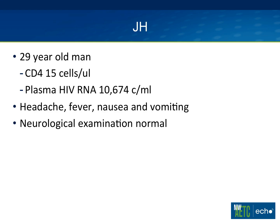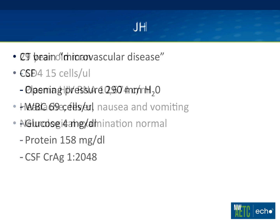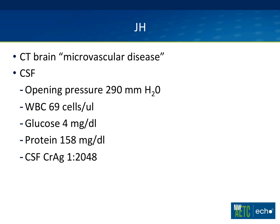A case: a 29-year-old man with a very low CD4, on therapy but probably not taking it, presented with headache, fever, nausea, and vomiting with a normal neurologic examination. His CT showed microvascular disease — rarefication of the white matter. CSF opening pressure was elevated at 290 millimeters of water (normal is below 200). He had mild CSF pleocytosis of 69 white cells, all lymphocytes; very low glucose; high protein at 158; and CSF cryptococcal antigen titer reactive at 1 to 2048.